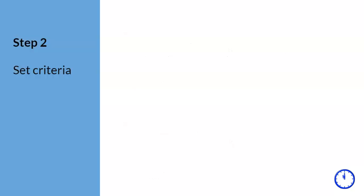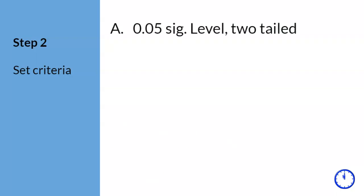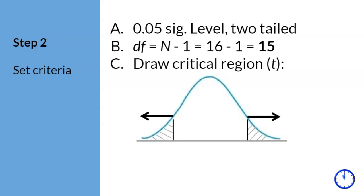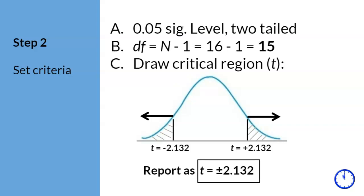Step 2. As the researcher, we get to decide the significance level, and the preferred one is .05. In a t-test, the first modification is to calculate the degrees of freedom of the sample. Using the formula n minus 1, the degrees of freedom is 15. Since we do not know if hyperactivity will increase or decrease sleep, we need to draw a critical region t for both tails, above and below the mean. The corresponding t-scores for a .05 significance level, two tails, is t equals plus or minus 2.132. Because the t-table provides scores to three decimal places, you may keep the answer to three decimal places.